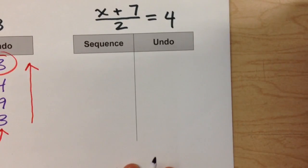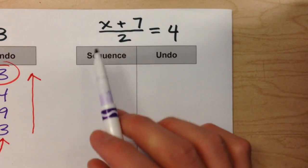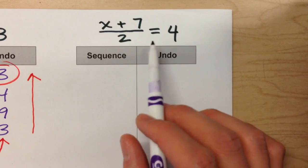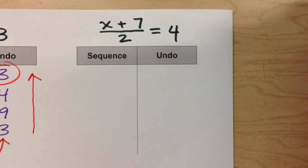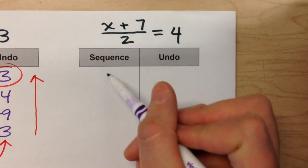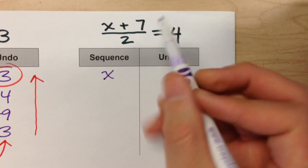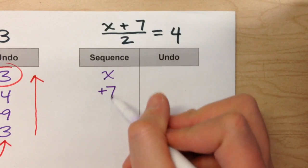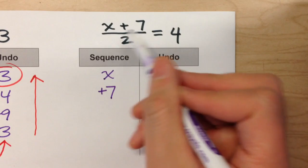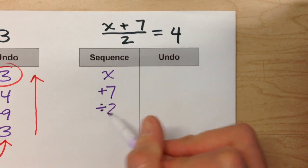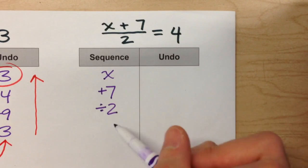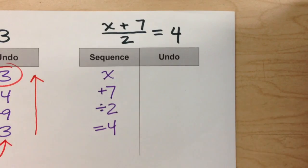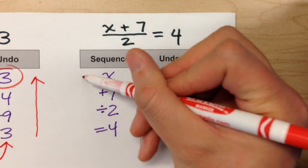I'll do one more. We've got this equation. x plus 7 divided by 2 equals 4. So in the sequence column, we started with x. And then we added 7. Then we divided it by 2. And it equaled 4. So that's our sequence of what happened to x.